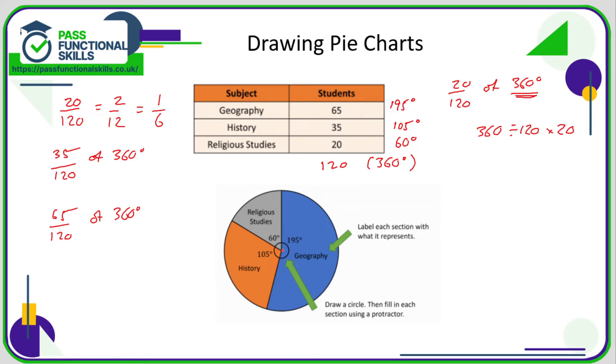Then we're going to draw a 60-degree slice using our protractor, and then using this line, work out a 105-degree slice. And then by default, the final one should be 195.